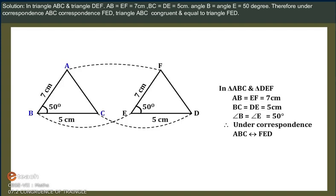Therefore, under correspondence, A, B, C corresponds to F, E, D. Triangle ABC is congruent to Triangle FED.